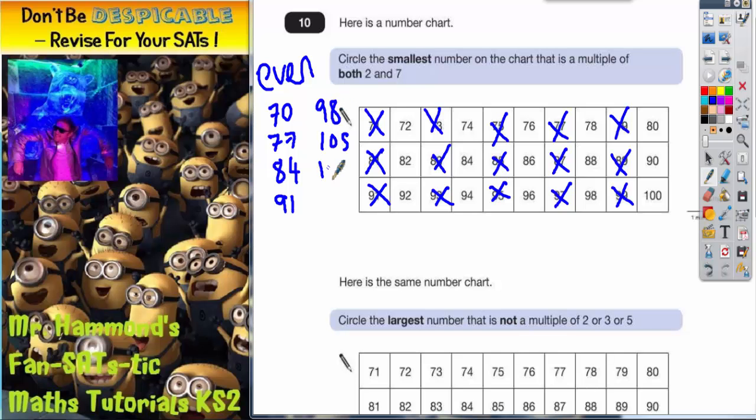112. Obviously we don't need to go any further because we've gone past 100. So these are the numbers which are my seven times table. That one's odd so I'm not interested in that one. That one's odd so I'm not interested in that one. These two are both over 100 so I'm not interested in those. So I've only got 70, 98, and 84.